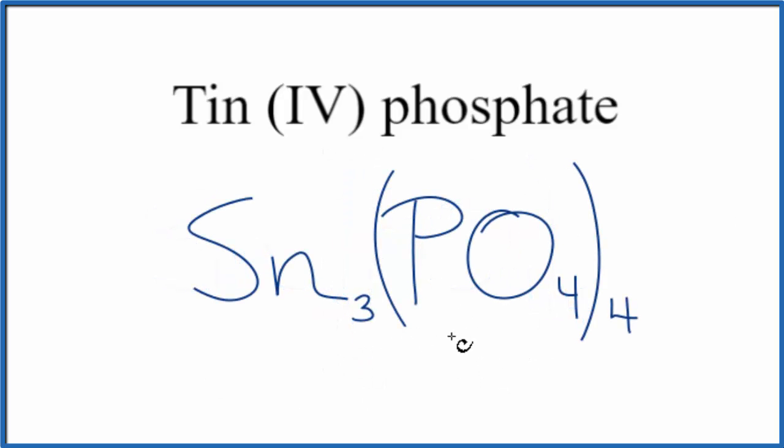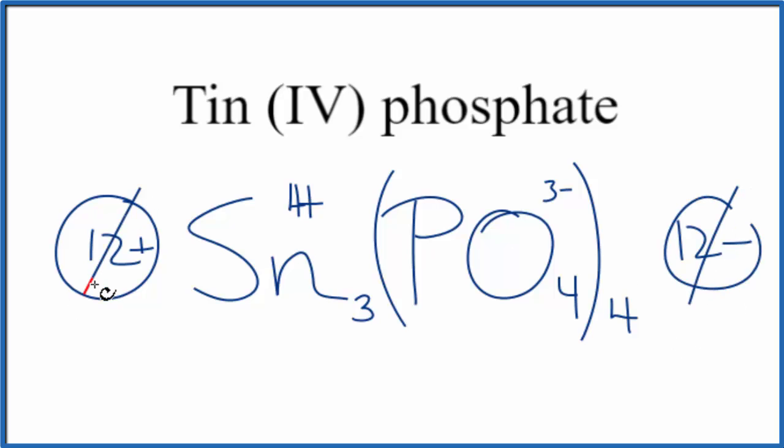So this is the formula for tin(IV) phosphate, Sn3(PO4)4. Let's quickly check our work, though. We said tin4, so 4-plus here, and we know the phosphate, each one, 3-. 4 times 3-, that's 12-. 3 times 4-plus, that's 12-plus. So these two numbers add up to zero. We have a net charge of zero. This is the correct formula for tin(IV) phosphate.